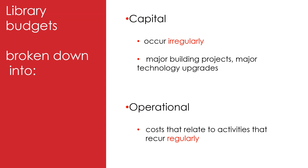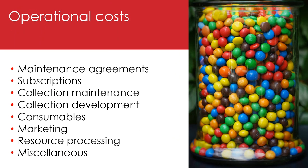The second category is operational costs. In a school library, this part of the budget will not include features public libraries might need to account for, such as salaries, rent or electricity. However, operational costs in a school library may include maintenance agreements, such as a regular payment for upgrades to the library management system or to SCIS for cataloguing subscription access, subscriptions to journals, magazines, databases, e-books or audio book platforms, or professional memberships.